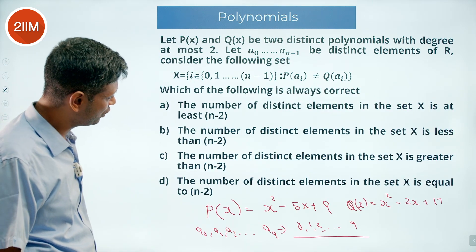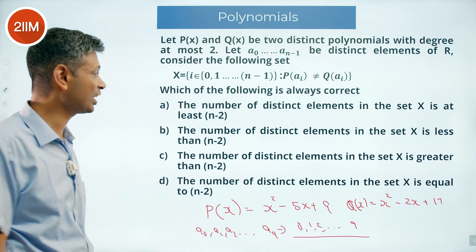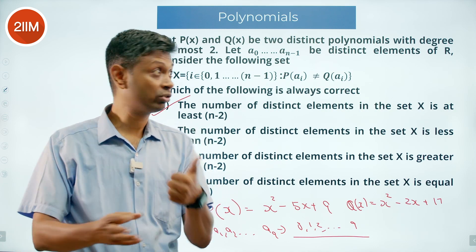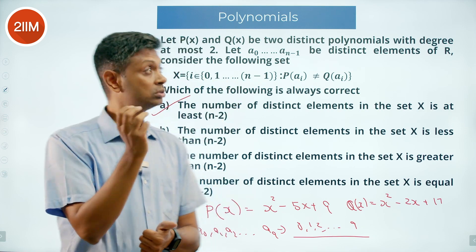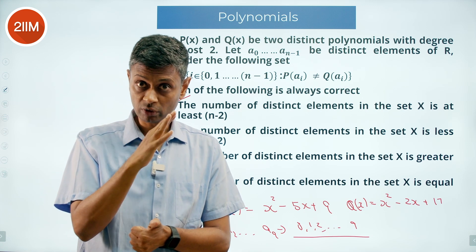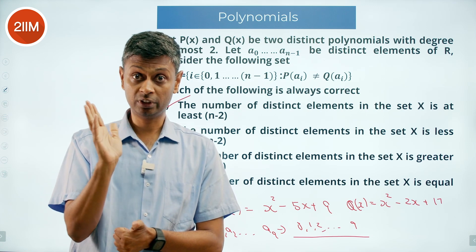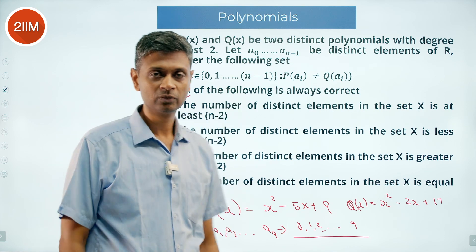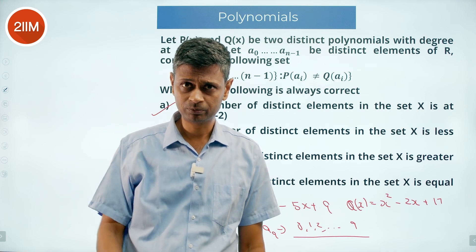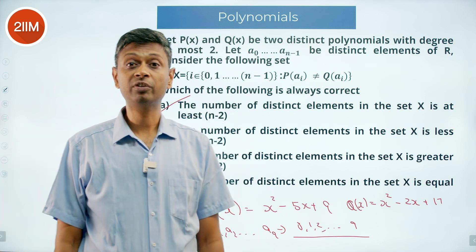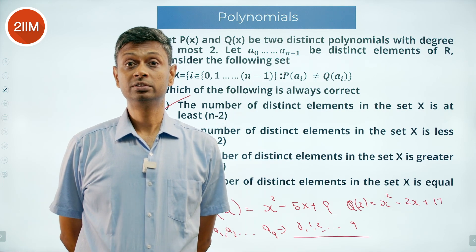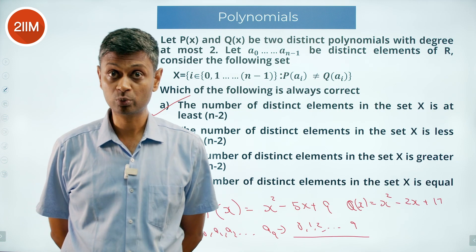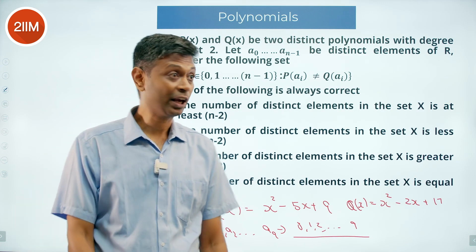Therefore the number of distinct elements in set X is at least n-2. It could equal n-2 if R(x) has two distinct real roots that happen to be a₀ and a₃, say — those two won't contribute, the remaining n-2 will. It could be n-1 if R(x) has one real root among the aᵢ's, or n if R(x) has no real roots among them.